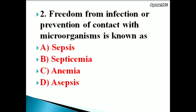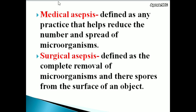Next question: Freedom from infection or prevention of contact with microorganisms is known as — options: sepsis, septicemia, anemia, asepsis. The correct answer is asepsis. Freedom from infection or prevention of contact with microorganisms is known as asepsis.